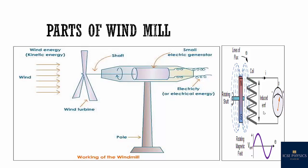So parts of windmill are wind turbine. As you can see here, this is a wind turbine which is having three blades. Then there is a rod attached to the wind turbine which is known as shaft. Then we have a small electric generator which is attached to the shaft and then these are the terminals from where we get electricity or electrical energy. And this box which contains the electric generator and which is connected to the shaft is placed on a pillar which is known as pole.